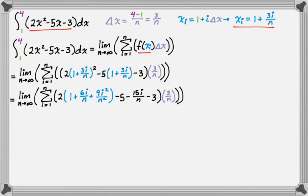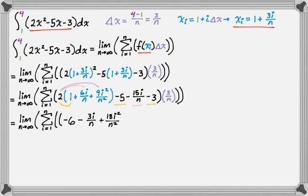Now we want to collect like terms. These turn into annoying algebra problems at some point. I'm going to distribute the 2. The constants are 2 - 5 - 3, which is -6. Distributing 2 to 6i/n gives 12i/n, minus 15i/n is -3i/n overall. Then 2 times 9i²/n² is 18i²/n². That's still f(x sub i), and there's still a delta x. Close the summation, close the limit.